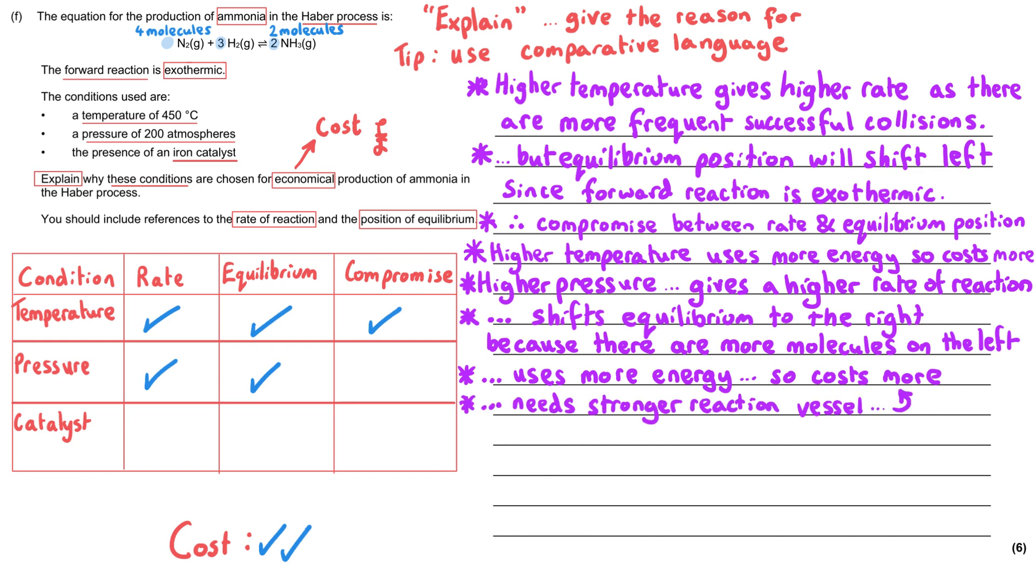And so the compromise on this occasion for pressure is between the rate and the yield, both being high, without the costs being too high. And so it's a compromise between rate and cost.